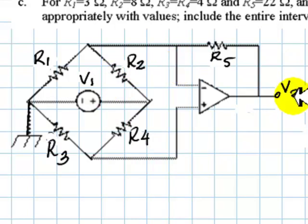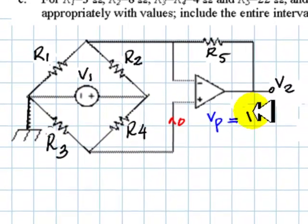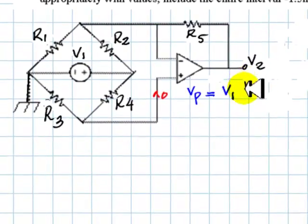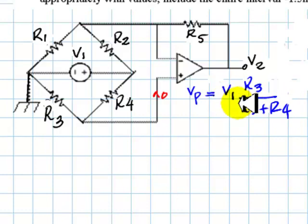We need to find V2. We go first to the P node of this one and find there is no current here of course. So this is a voltage divider. And we say Vp is simply a voltage divider of V1 over those two resistors. Done.